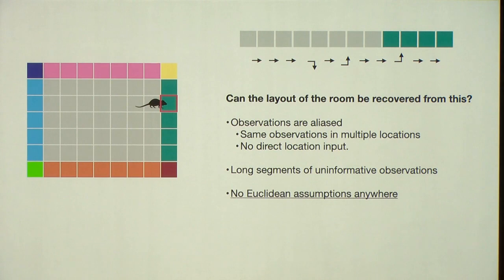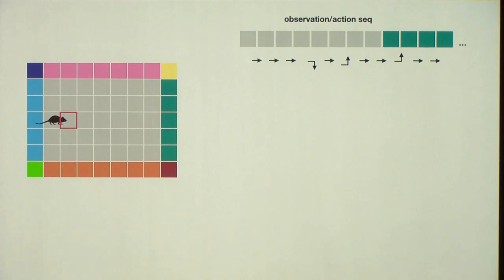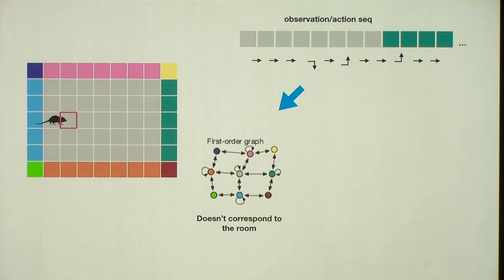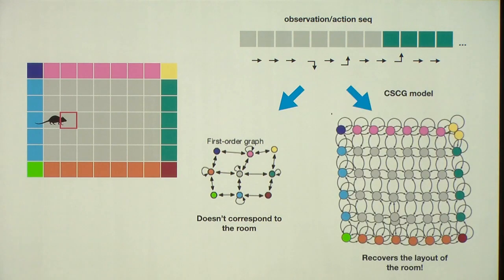You're just getting local observations and your action sequences. Can you learn the layout of the room? There's no Euclidean assumption you are allowed to make. And you get long sequence of uninformative blanks, grays, in a blank room. And if you just do a naive approach, just learn a Markov chain, first order, you can't do that. If you just do successor representations on the input, you can't get that. But if you use our model, CSCG model, you can actually learn the layout of the room. It, in fact, recovers it exactly.